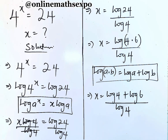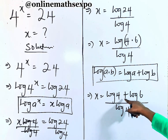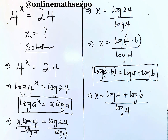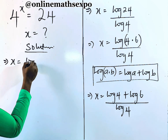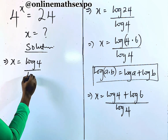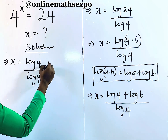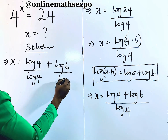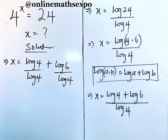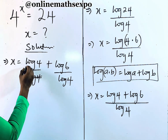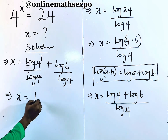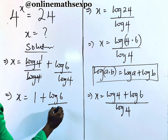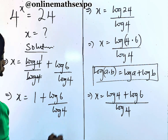We are going to use log 4 to divide each of the numerators. So x is equal to log 4 divided by log 4, plus log 6 divided by log 4. We observe that log 4 over log 4 are the same, so whenever a number divides itself it's always 1. So we have x is equal to 1 plus log 6 divided by log 4.